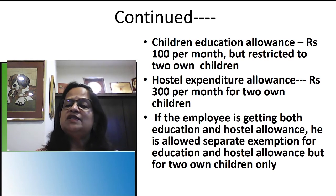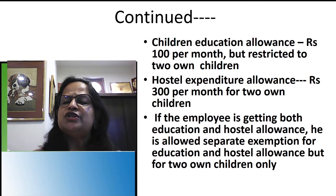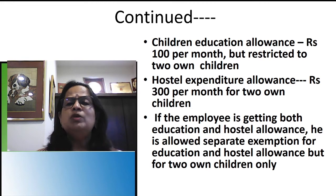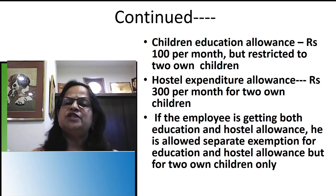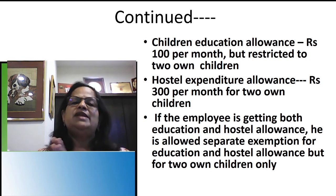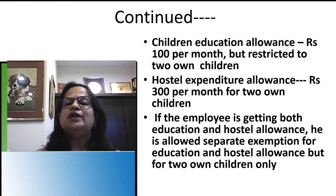Children education allowance and hostel expenditure allowance are very important and always appear in salary computation. Children education allowance is Rs. 100 per month, restricted to two own children — so Rs. 1,200 per year maximum. The word 'own children' is important. Step children and adopted children are not included in the exemption. It is a very negligible amount and the rate has not been revised — it is still only Rs. 100 per month.